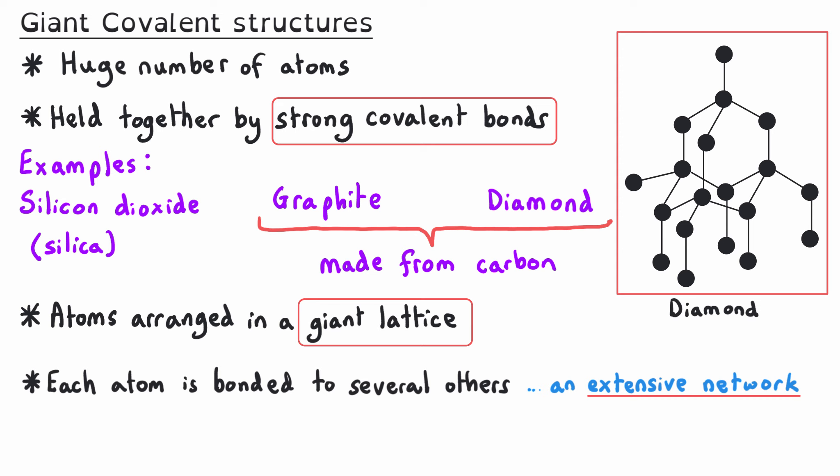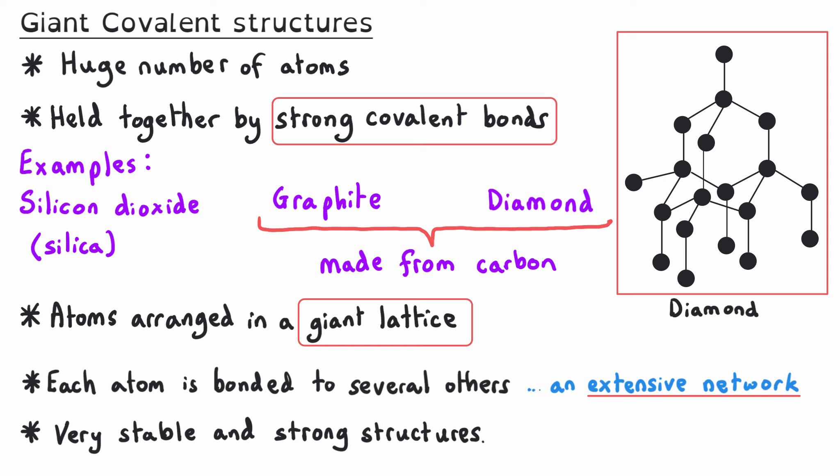As a result of this giant covalent structure, these substances are very stable and very strong. They usually have a high melting point and a high boiling point, meaning it requires a lot of energy to turn them from solid to liquid or liquid to gas. This is due to those strong covalent bonds within the structure — a lot of energy is needed to break them, so it only happens at very high temperatures. Giant covalent structures will be covered in greater depth in a separate video.